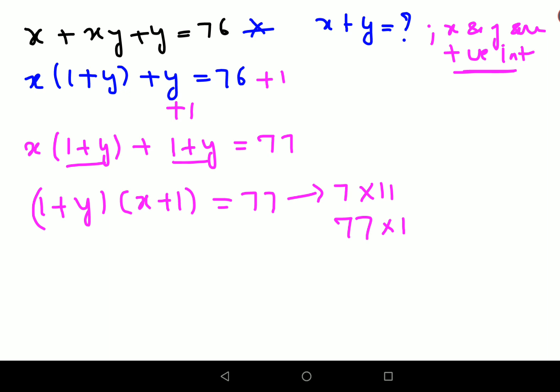Now if we take this particular value, we can say either (1 plus y) is 77 and (1 plus x) is 1, so from here I can say x is 0. And I want x and y both of them to be positive integers, and 0 is neither positive nor negative, so from this we can discard this particular scenario.